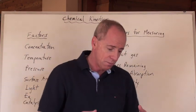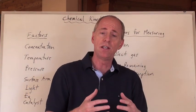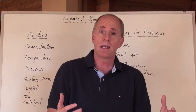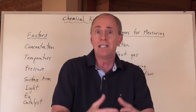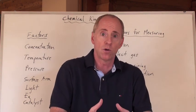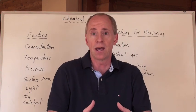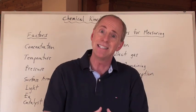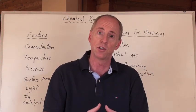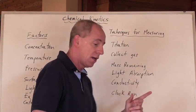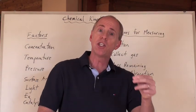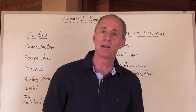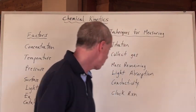Conductivity is another measurable property. When you mix chemicals together, the conductivity of a solution might increase because more ions are being made, or decrease because chemicals are precipitating out of solution. You can measure the conductivity change over time to get a rate of reaction.